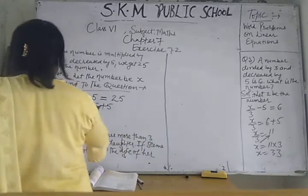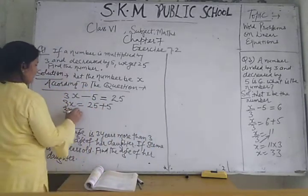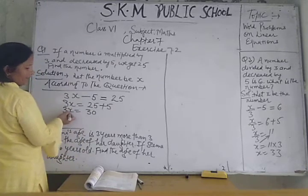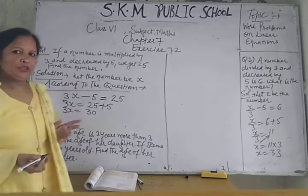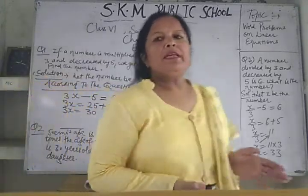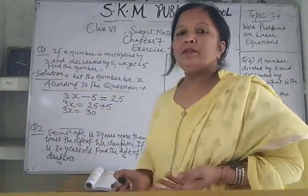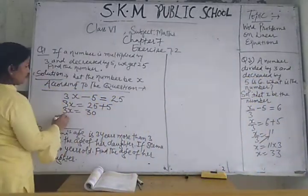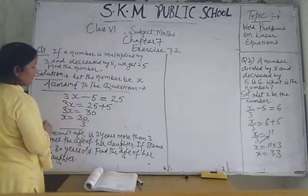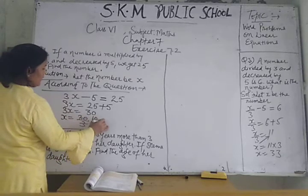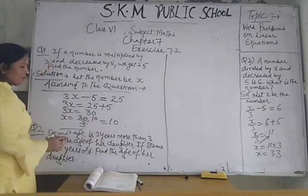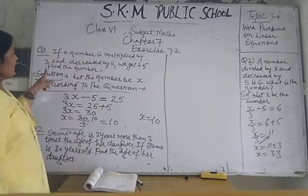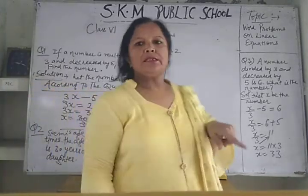Then 25 plus 5 is 30. Now 3 is multiplied with x, so we make the opposite operation — we divide. x is equal to 30 divided by 3, which is 10. So x is equal to 10.